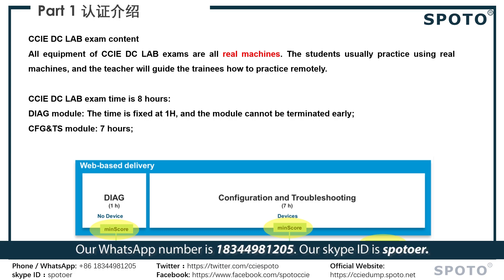If you are interested, here is our contact information. Our WhatsApp number is +1-344-9A1-2050. Our Skype ID is SPOTER.